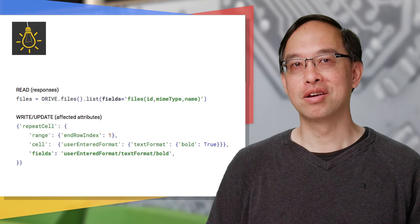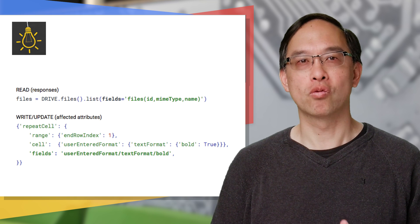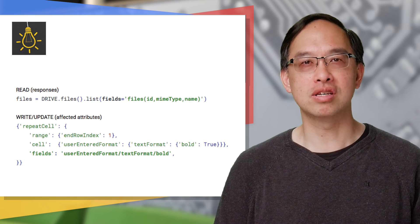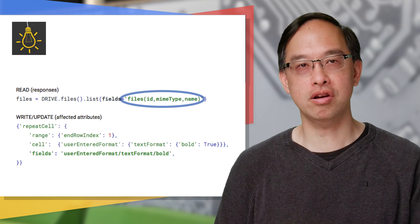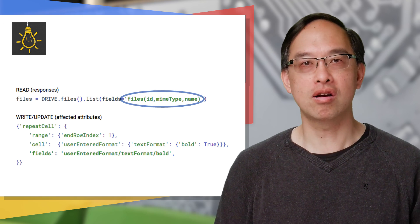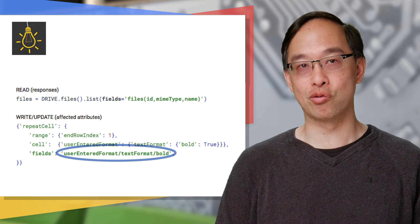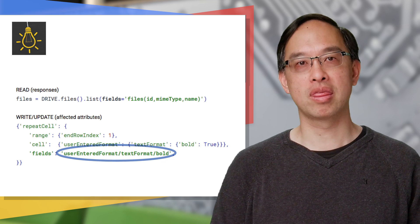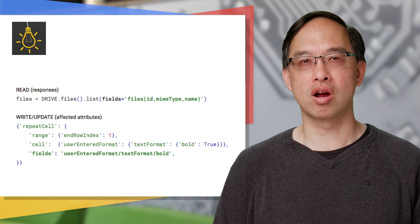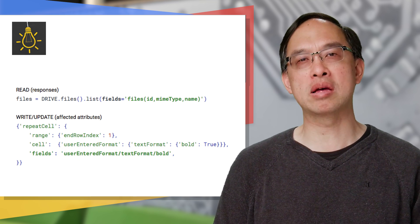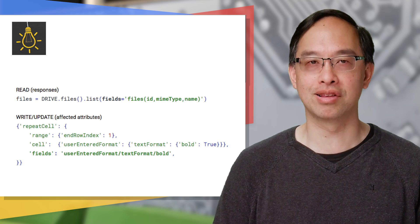Tip one: for the Sheets and Slides APIs, fields for read operations is an API call parameter. But for write operations, they're an attribute you set in your requests. Updates may also have fields as a parameter, but this depends on the API and possibly your client library.